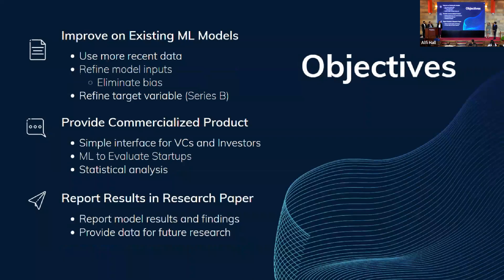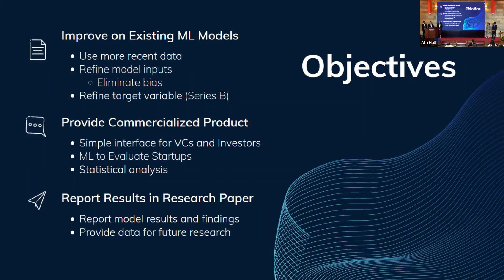Our goal for the machine learning model is to improve on existing models by using more recent data, eliminating bias in the data, and refining the target variable to help reach a closer approximation to modeling company success. From our research, we defined startup success as the acquisition of Series B funding. We also plan on creating a commercialized web application for VCs that filters successful companies and provides analysis of model results, and will present our findings in a research paper for future use.